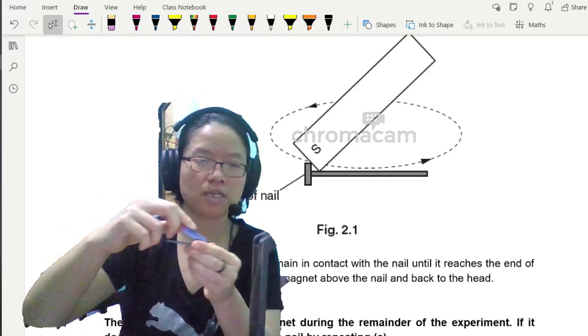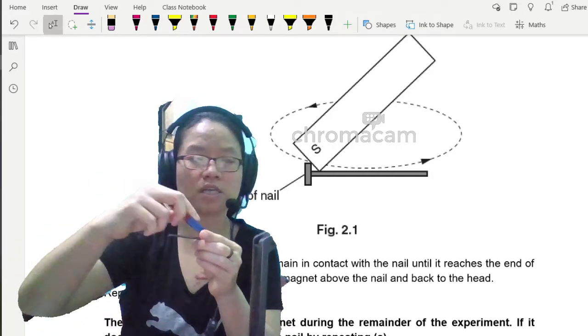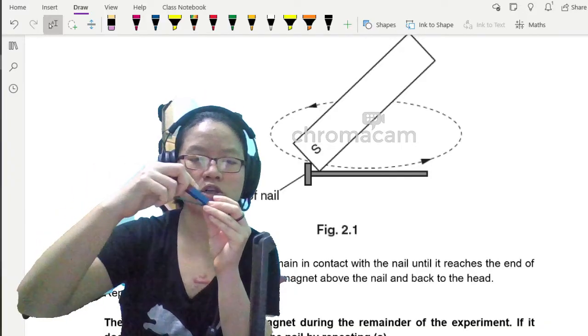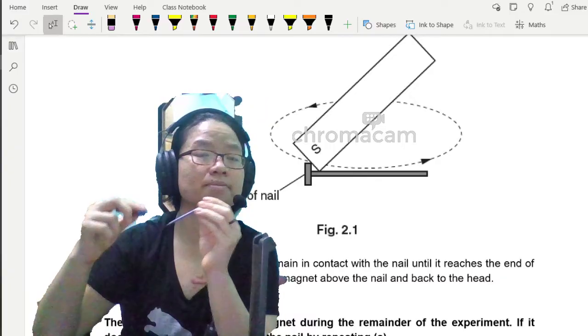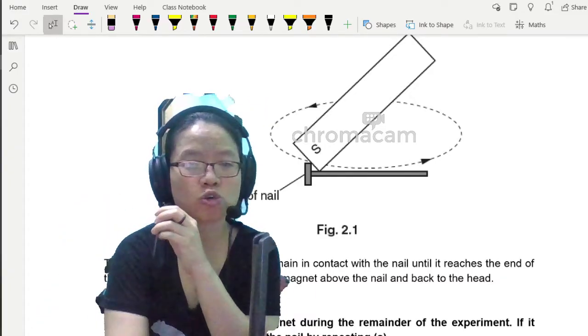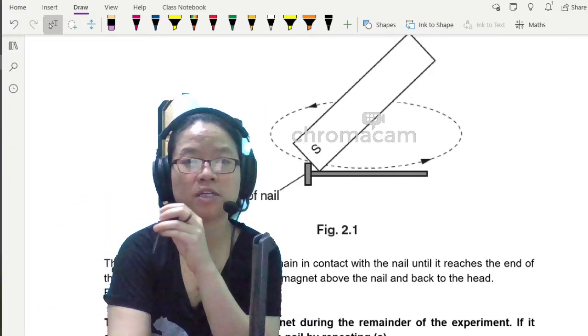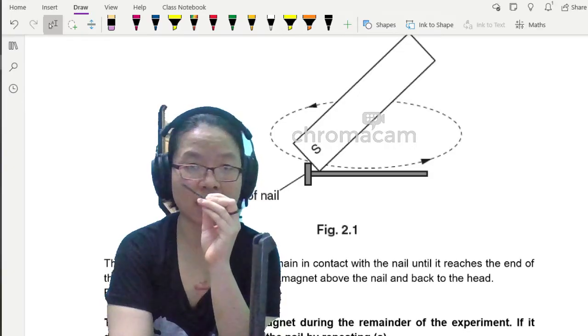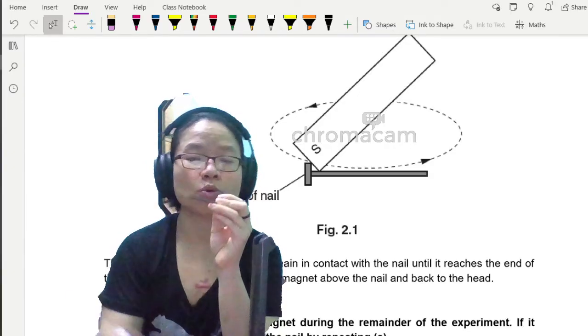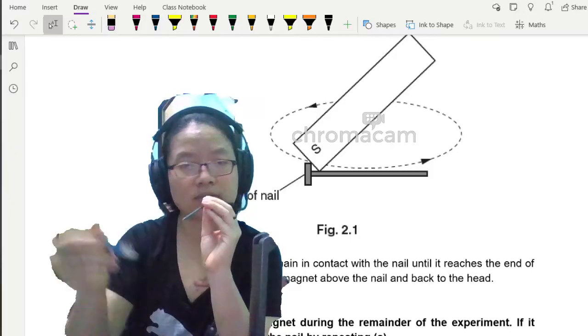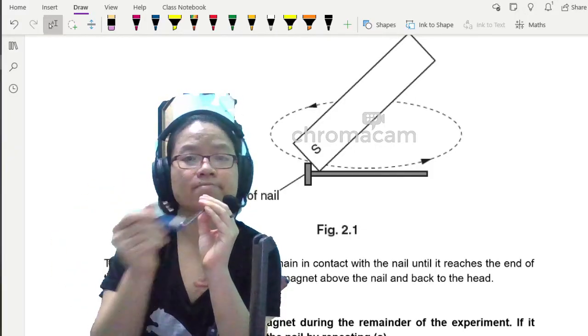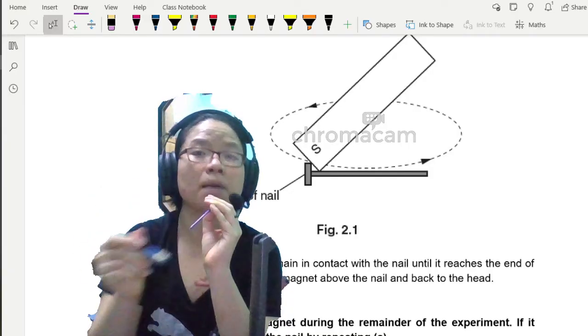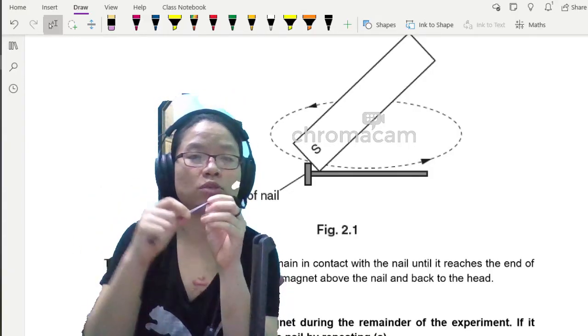So make sure that after this, this nail is magnetized. You shouldn't drop the nail. If you do so, you have to re-magnetize it. You also shouldn't touch the nail to the magnet or the retort stand or anything that's magnetic.